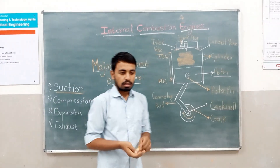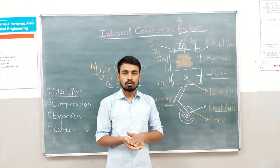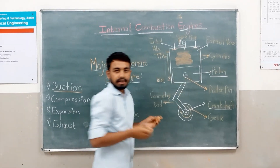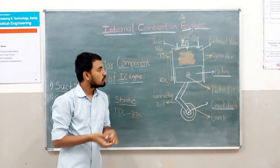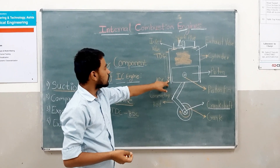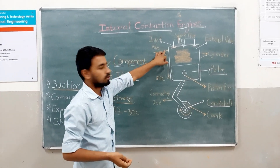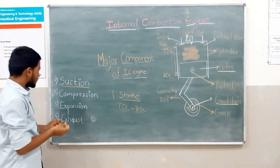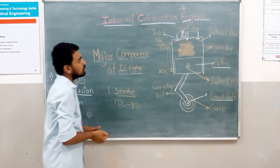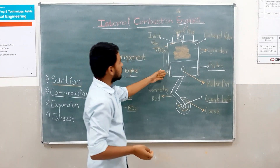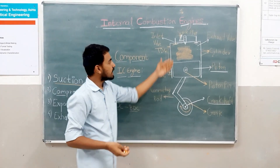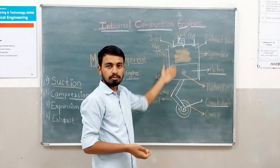During the second stroke, both valves are kept closed and the piston moves from BDC to TDC. This process is known as compression. When compression happens, the temperature and pressure inside the combustion chamber increase.